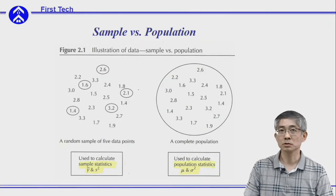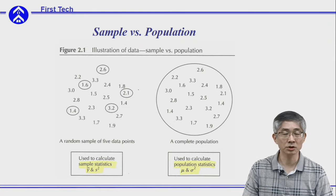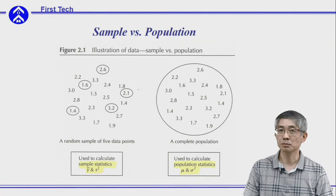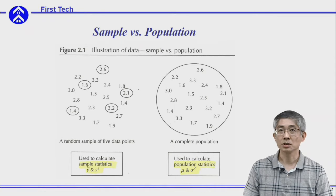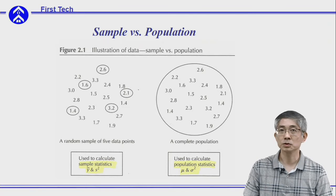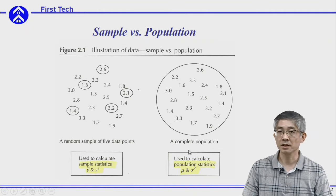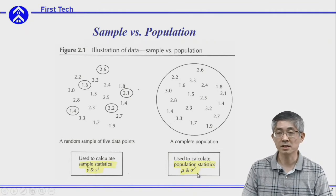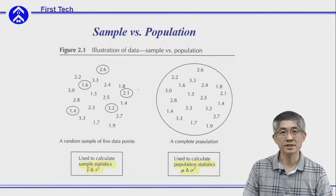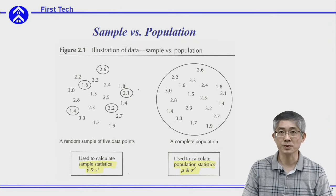Most of the time, when you want to monitor the behavior of your batch of productions, you need to measure certain properties. If you measure every part of this batch, you will get a population distribution. There are two important statistics to represent the distribution of your population: the first is called mean and the second is called variance. But most of the time we don't have the resources to measure every part in this batch — we only measure some samples and try to use these samples to predict the behavior of the whole batch, which is the population.